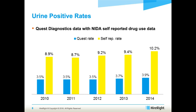When you juxtapose the Quest laboratory positive data in urine and compare it to what the National Institute on Drug Abuse publishes — where they query large segments of the population asking if they've used drugs in the last 30 days, last year, or lifetime — according to their last published report with 2014 data, the self-reported illicit drug use in the last month has been in the 9% range and is now over 10%. So it's actually increasing, whereas the urine positive rate during the same period has remained flat. When the lines are diverging, you have to ask yourself why.